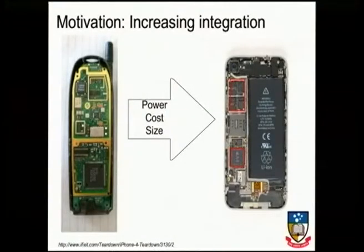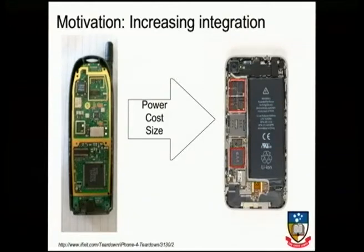So why do we have multiprocessor system-on-chips? Systems are getting smaller. We're integrating more and more functionality into fewer and fewer chips. On one side we have a Nokia from the late 90s with a number of ICs and very limited functionality — a very small number of pixels on screen, essentially only making phone calls and sending texts.